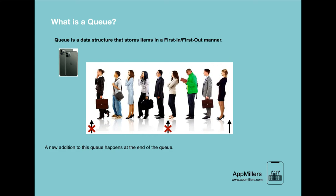The next feature is that the person at the beginning of the queue will buy the iPhone first — she will be served first. Then the second person, then the third, then the fourth, and it continues like this until the end. So if we summarize these features, we are following the FIFO method, which means first in, first out. The lady who came first will get the iPhone first as soon as the store opens, then the second, then the third, and so on.